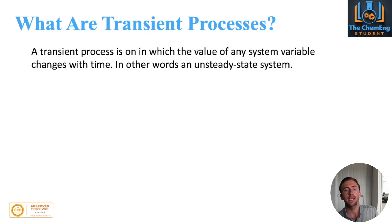So the first question we need to ask is, what is a transient process? Well the transient process is one in which the value of a system variable will change per unit time. In other words, what we're basically saying here is an unsteady state system, something is going to change with respect to time.